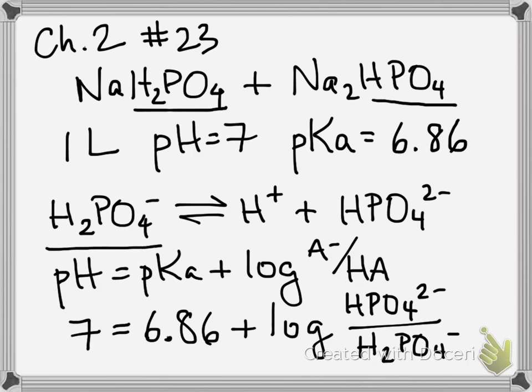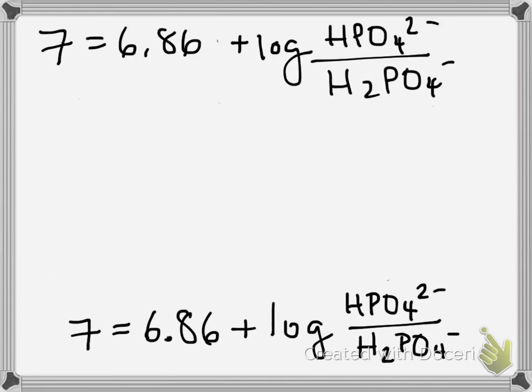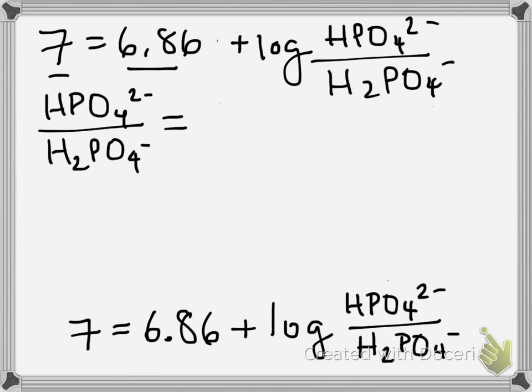Remember, the acid form will be the one that's more protonated. The deprotonated form is its conjugate base. So, you subtract 6.86 from 7, and you take the antilog, and you'll get HPO4 2- over H2PO4 equals 1.38.